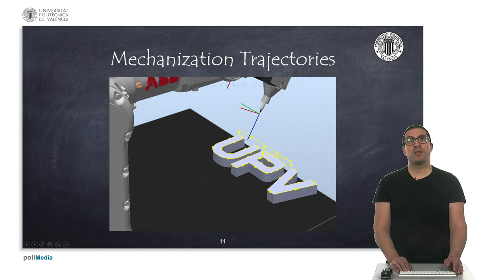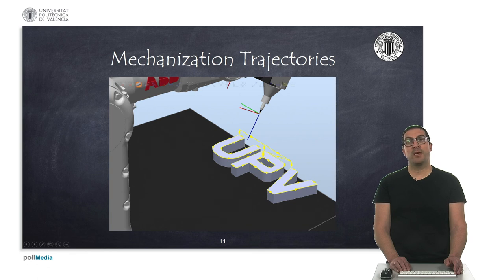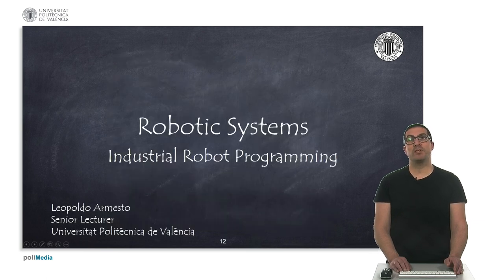Mechanization trajectories also have approach and evacuation maneuvers, as in the previous example, usually at medium or slow speed. The main difference is that during the mechanization trajectory, we will typically make linear or circular coordinated movements at low speeds, which depend on the tool used based on the manufacturer's recommendation. The tool will start rotating just before we reach the first approach point and will stop when we execute the last evacuation maneuver. Points of the trajectory can be stop points or non-stop points, depending on what we want. In this presentation I have made a first general introduction about industrial robot programming. In the next video I will introduce ABB's Rapid language programming. Thank you very much.